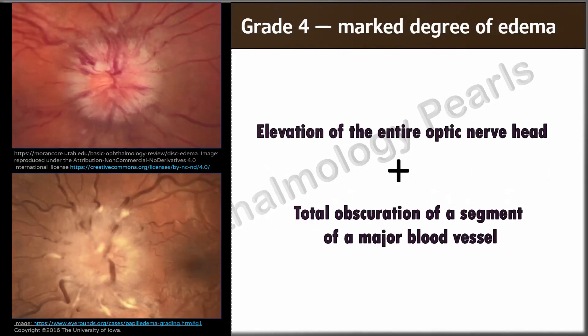In grade 4, there is an elevation of the entire optic nerve head including the cup. In addition, there is total obscuration of a segment of at least one but not all major vessels on the disc.